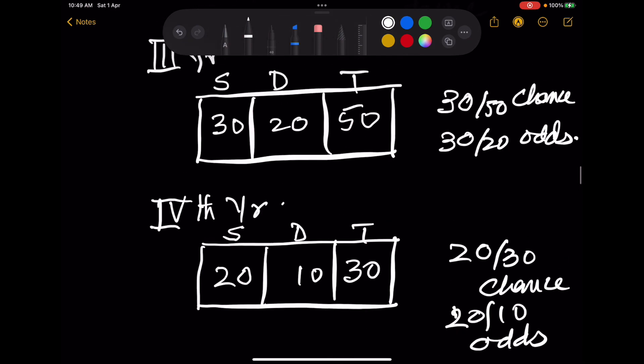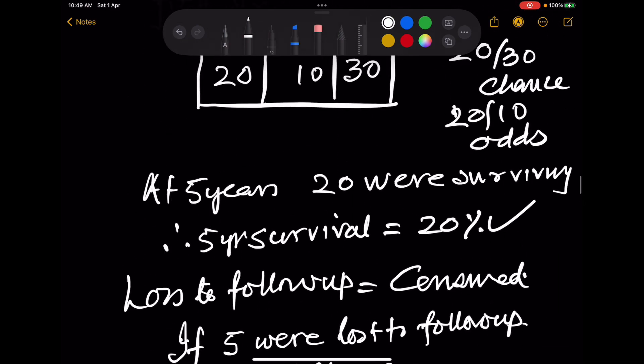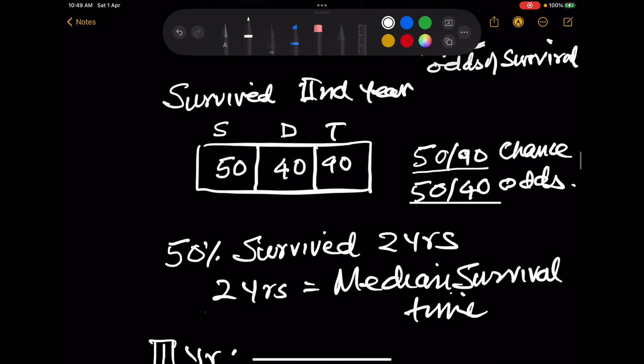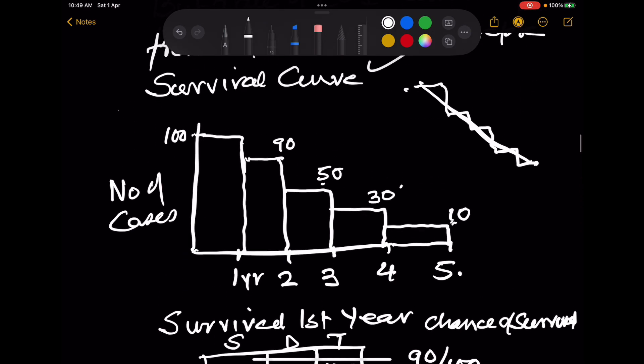Now supposing in the first year 5 were lost to follow up. 5 we could not follow up, lost to follow up. Therefore this base number would become 85. So these 5 are called censored.